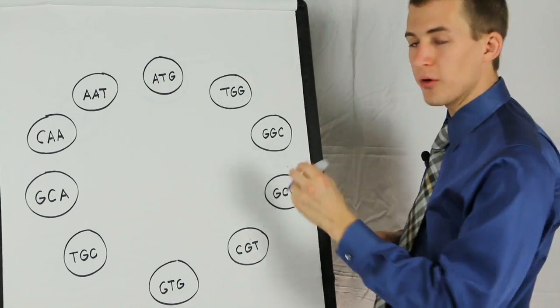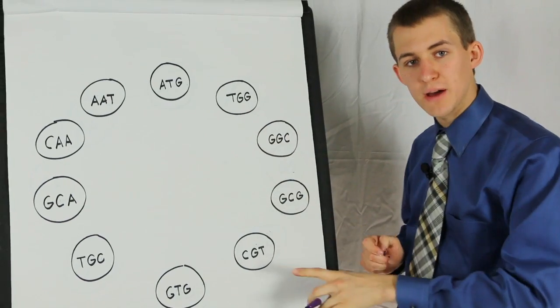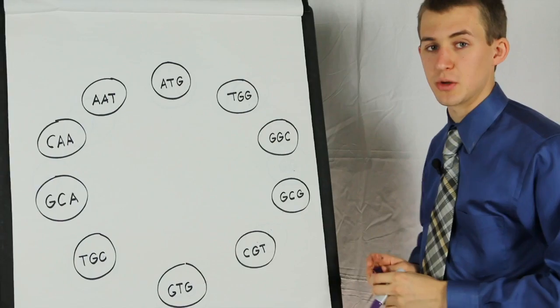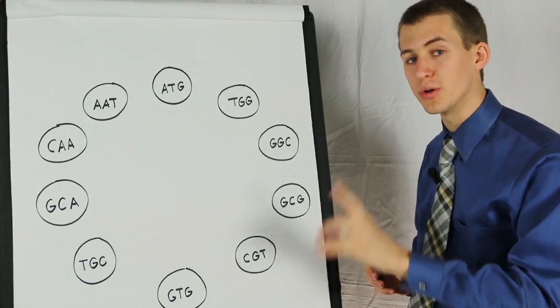Thus, a Hamiltonian path through this graph would represent the entire human genome sequence, passing through each node once.